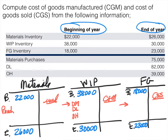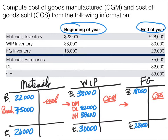They also tell me material purchases are $75,000, direct labor is $82,000, and overhead is $39,000. So now I can figure out what's missing. Beginning materials of $22,000 plus purchases of $75,000, less ending materials of $26,000 means I must have used $71,000 in direct materials.